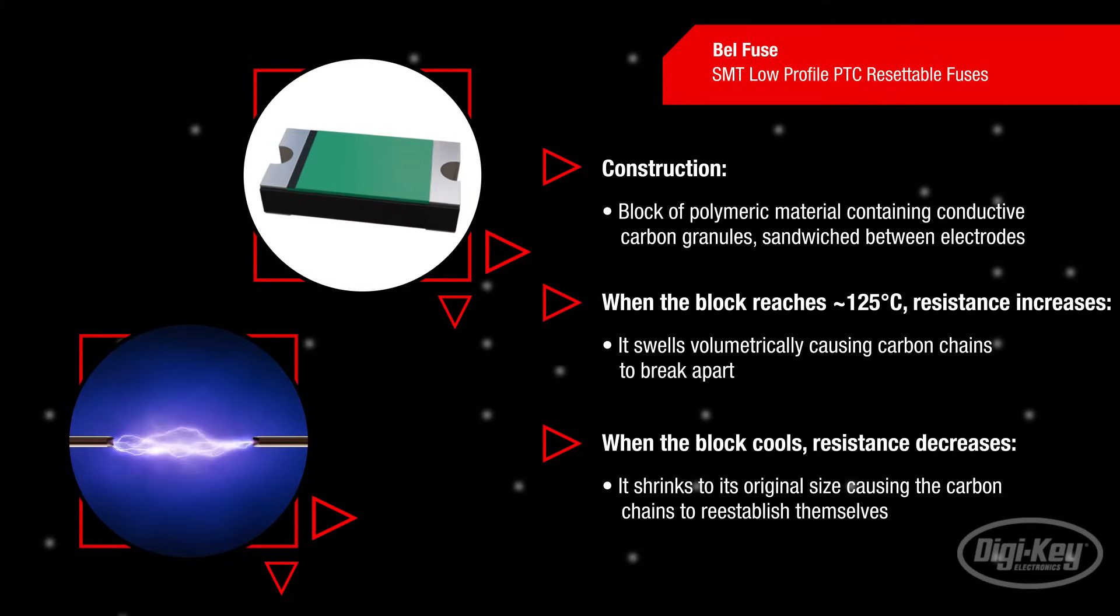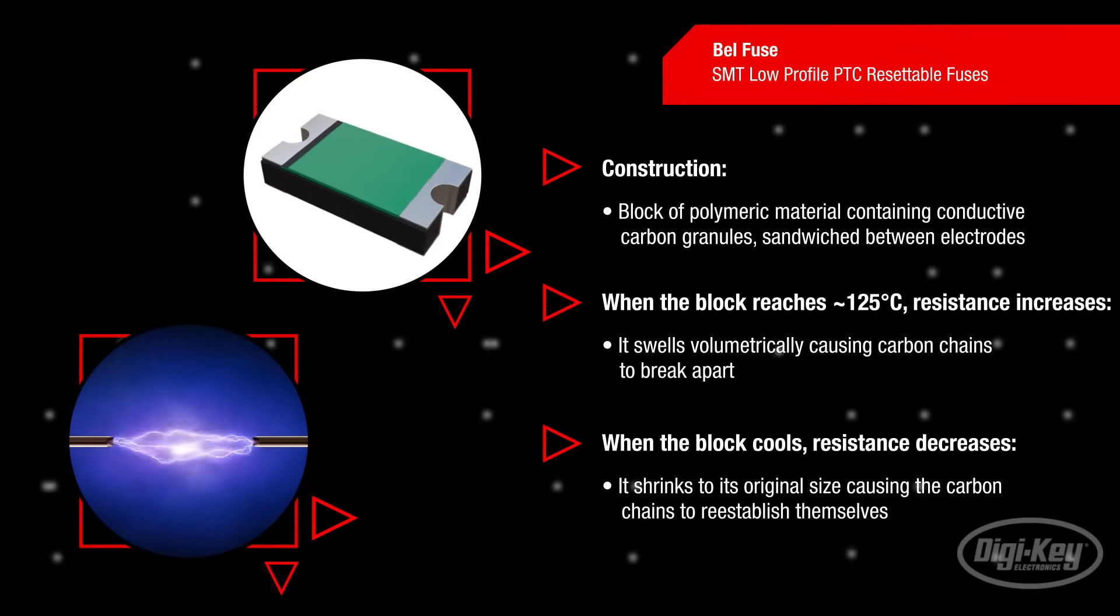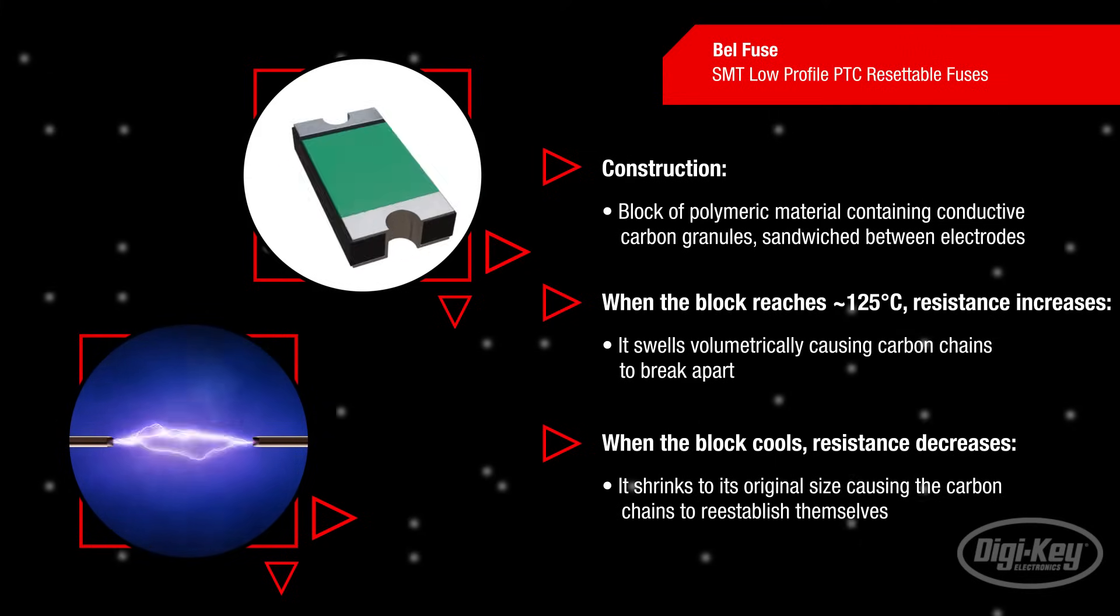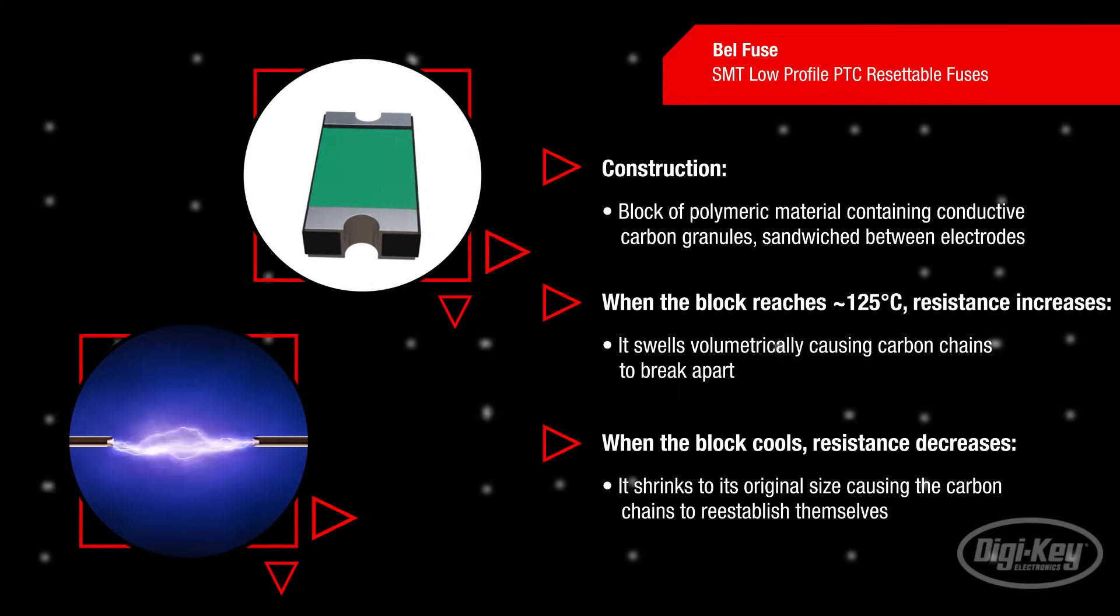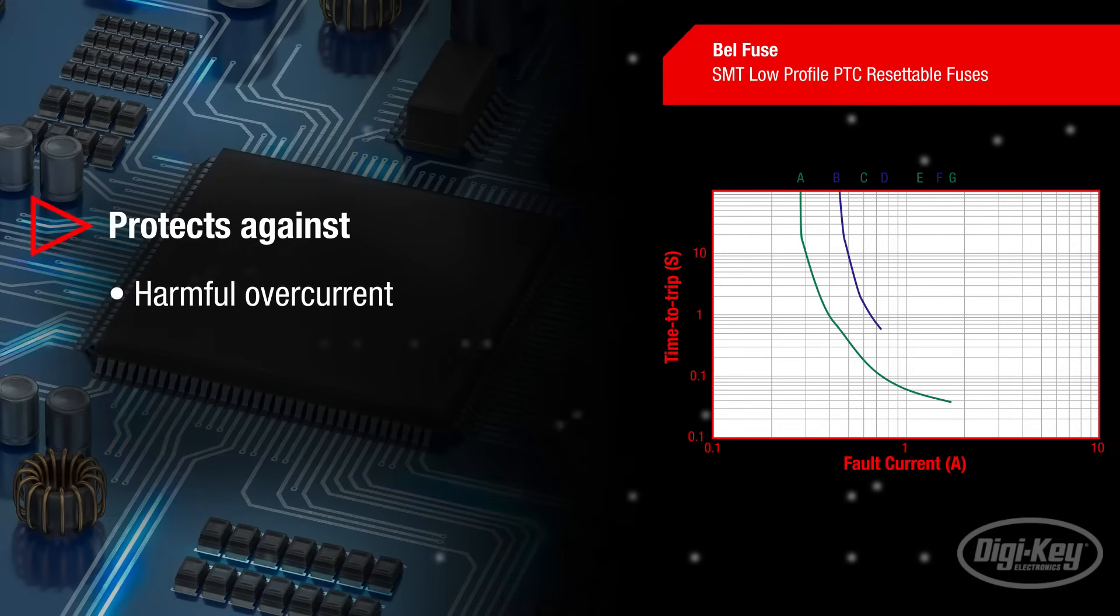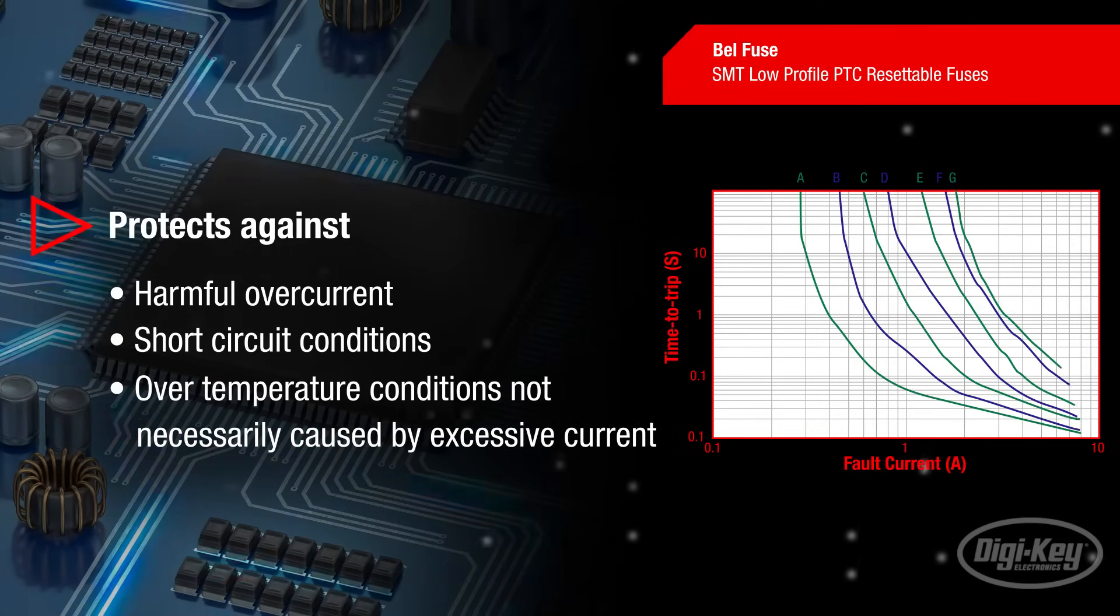This reset ability protects electronic equipment, which remains fully functional and eliminates the need for service personnel to physically replace a fuse. This behavior allows the fuses to protect against harmful overcurrent, short-circuit conditions, and over-temperature conditions not necessarily caused by excessive current.